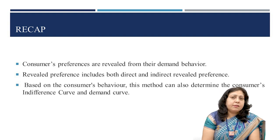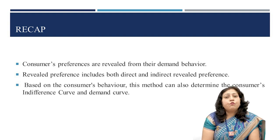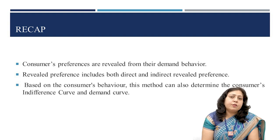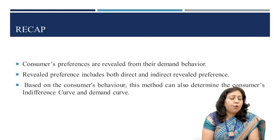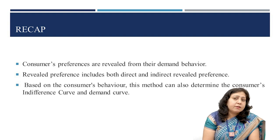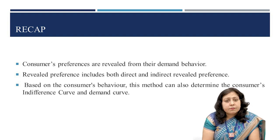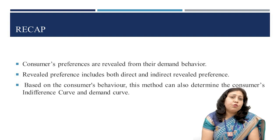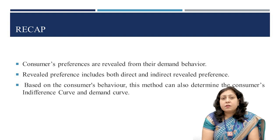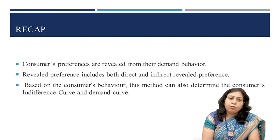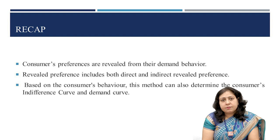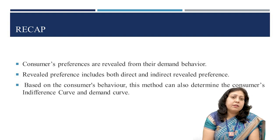The theory explains that consumer preferences are revealed from their demand behavior. Revealed preference includes both direct and indirect revealed preference. The foundation of this theory is the notion that real decisions made by customers in the marketplace best reflect their preferences. Based on consumer behavior, this method can also determine the consumer's indifference curve and demand curve. The validity of this whole exercise depends upon fulfillment of both the weak axioms and the strong axioms of revealed preference to consequently derive a demand curve.